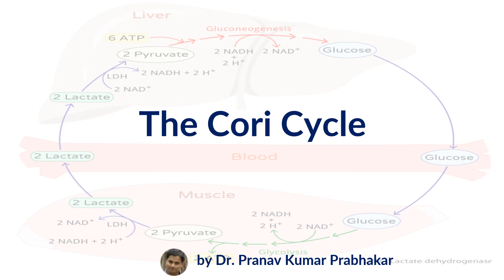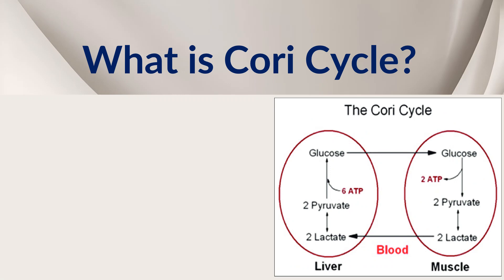Lactic acid is a dead-end product of glycolysis — it cannot be further utilized everywhere in the body. So this pathway is linked with lactic acid only. The Cori cycle, also known as the lactic acid cycle, is a crucial metabolic pathway that occurs between the liver and the muscle, connected through blood circulation. It plays a significant role in the conversion of lactic acid to glucose between the liver and muscles.